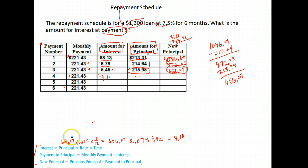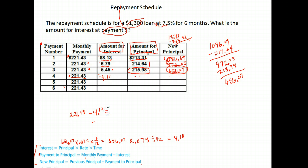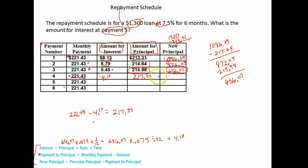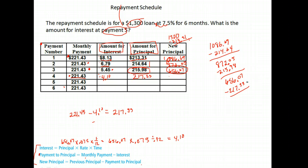Now I need to know what amount went to principal. Payment to principal is your monthly payment minus the interest. Our monthly payment was $221.43 and $4.10 of that went to interest, so we subtract $221.43 minus $4.10, which gives us $217.33. So our new principal balance is $656.07 minus $217.33, which gives us $438.74.